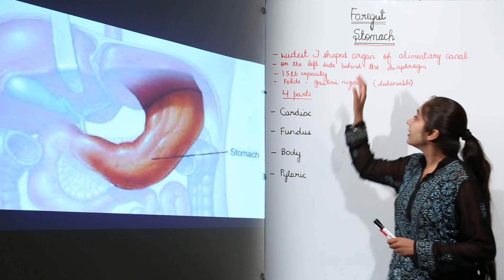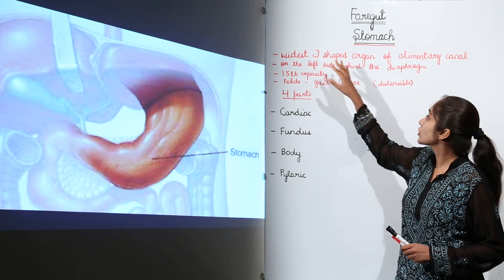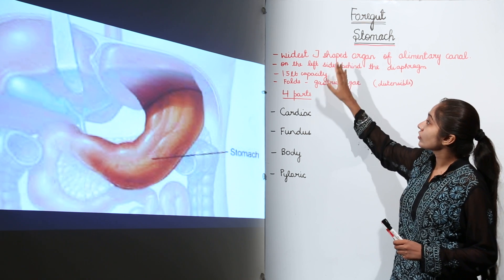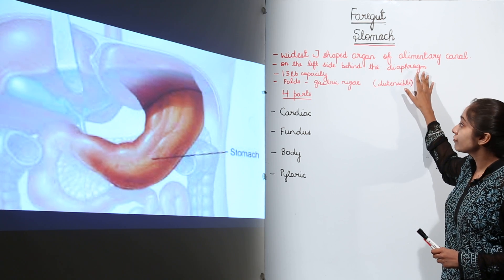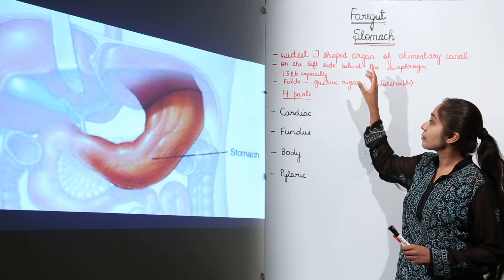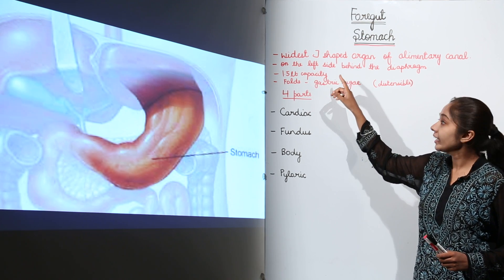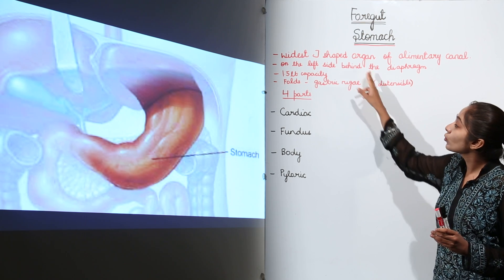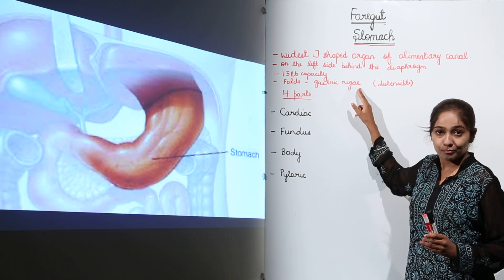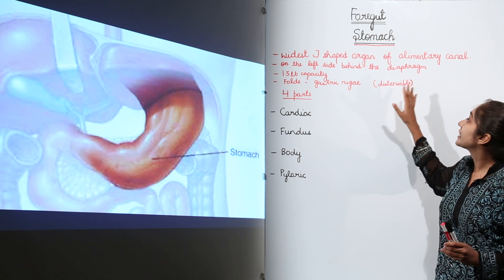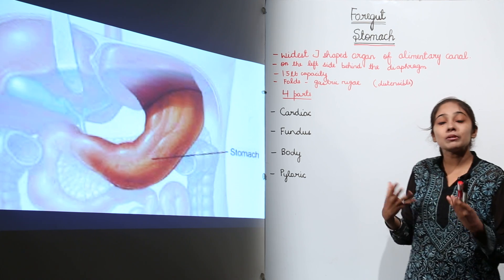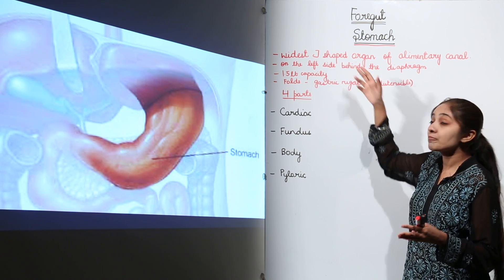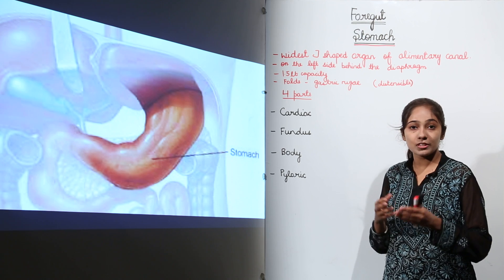Moving on to the stomach, which is the widest J-shaped organ of the alimentary canal. It is present on the left side, behind the diaphragm. The capacity of the stomach is around 1.5 liters. There are folds on the stomach wall known as gastric rugae, which make the stomach distensible — meaning something that can be stretched.